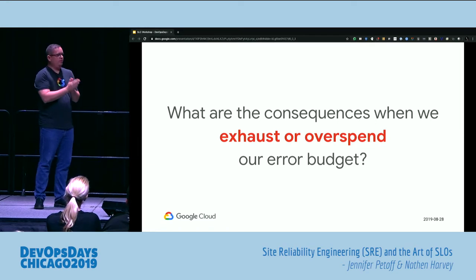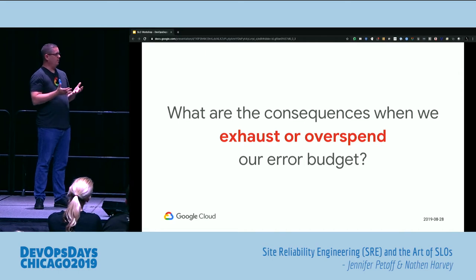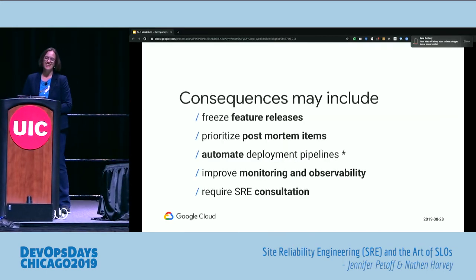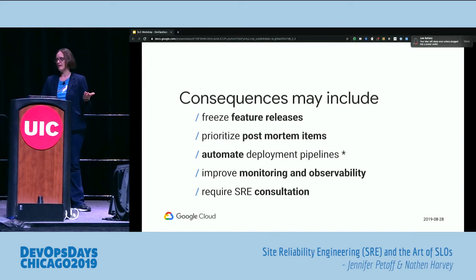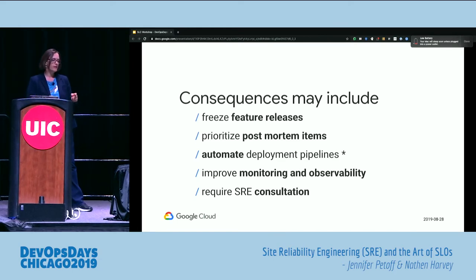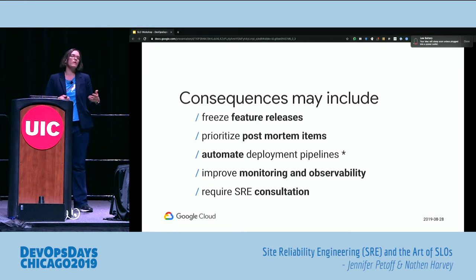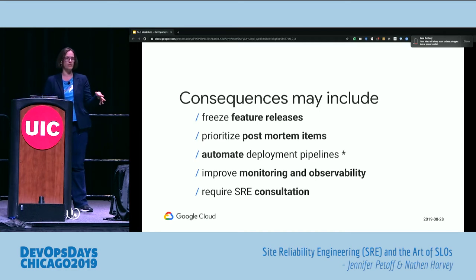If we're going to use the error budget to prioritize what work to do, what are the consequences of exhausting or overspending that error budget? When you declare bankruptcy, so to speak — consequences could include freezing feature releases, prioritizing action items from postmortems, automating deployment pipelines, improving monitoring and observability, or requiring an SRE consultation — having a second set of eyes look things over to see if this is likely to cause problems in production.